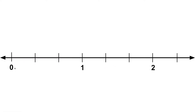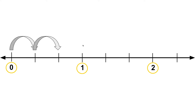Let's take a look at this number line. This number line has the whole numbers 0, 1, and 2. We notice that there are equal segments between the whole numbers. So let's count how many equal parts or segments there are between 0 and 1: 1, 2, 3. There are 3 equal parts between the whole numbers 0 and 1. Therefore, the denominator is going to be 3.